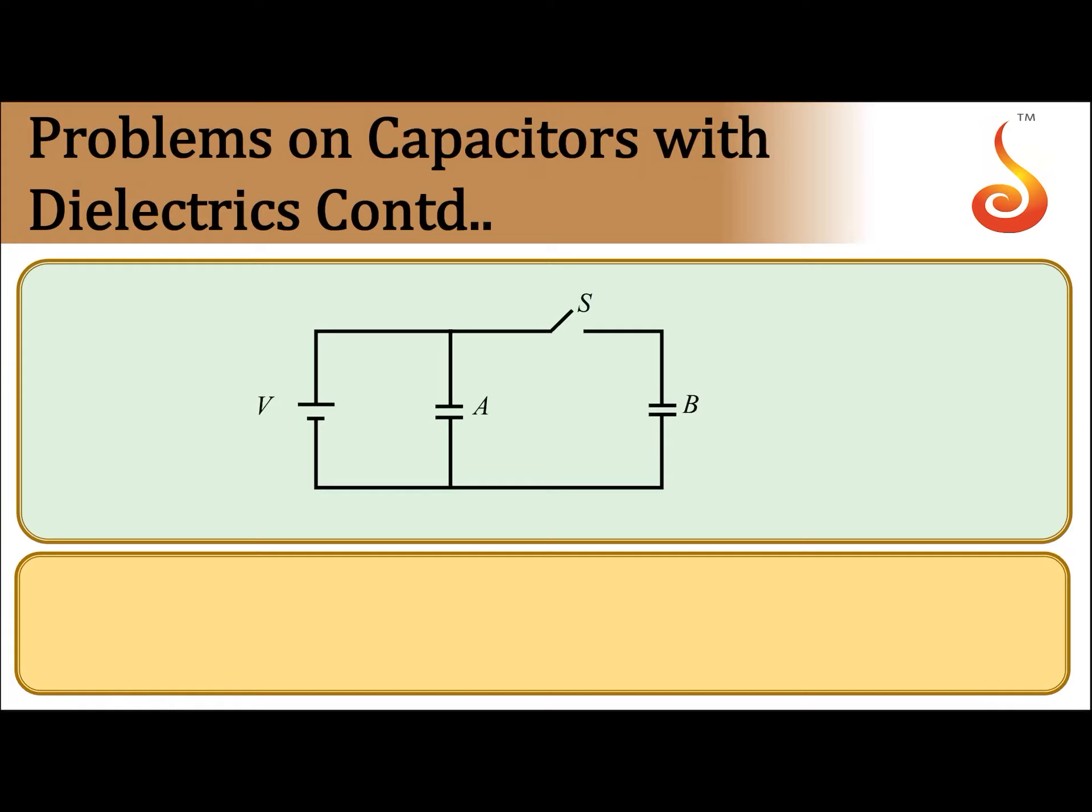This is the diagram given. A and B are two capacitors, they are identical, let us say their capacitance is C. When the switch S is closed they will be parallel.